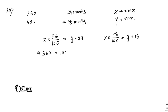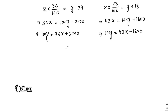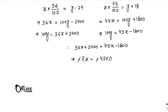From the equations: 36x equals 100y minus 2400, and 43x equals 100y plus 1800. So 100y equals 36x plus 2400 and 100y equals 43x minus 1800. Setting them equal: 36x plus 2400 equals 43x minus 1800, so 4200 equals 7x, giving x equals 600.